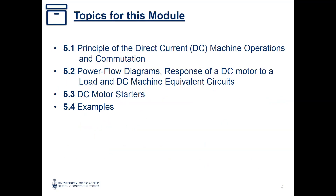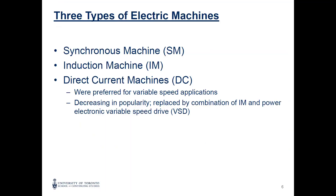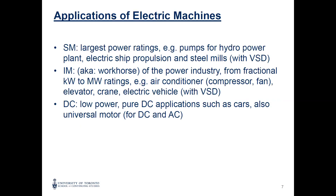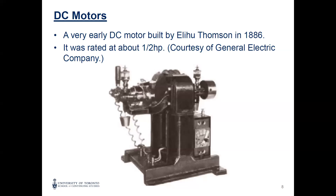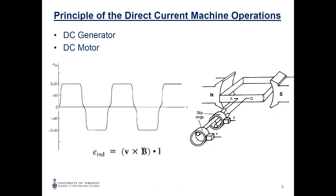We already went through the DC machines and their applications. We said there are still some applications for DC motors, though not as popular as AC machines. One example is the starter for the car — we still use a relatively small DC motor to start your car.